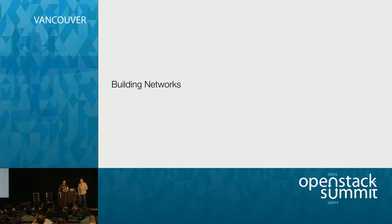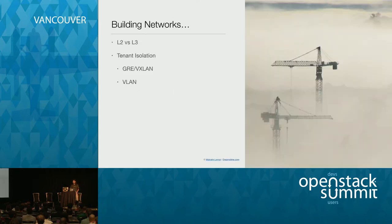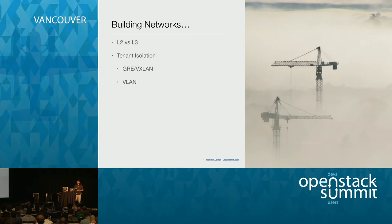When building a network you have some decisions to make upfront - crucially whether you're going to build an L2 or an L3 network. If building an OpenStack network, we need to decide how to perform tenant isolation between different tenants running on the cloud. Common approaches include the traditional VLAN, and more modern approaches like GRE and VXLAN - VXLAN in particular we'll talk about quite a bit.